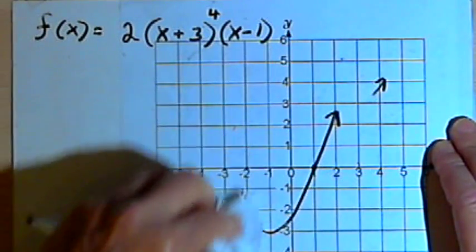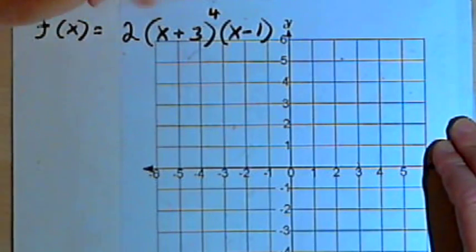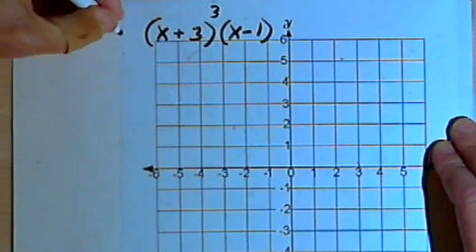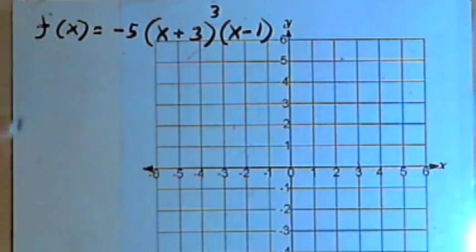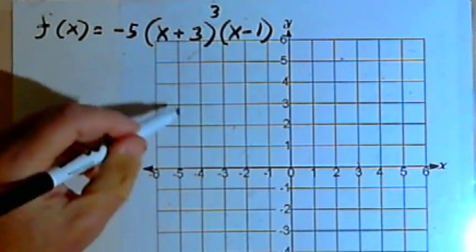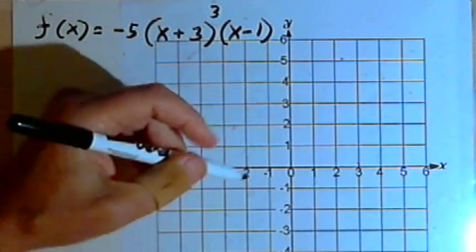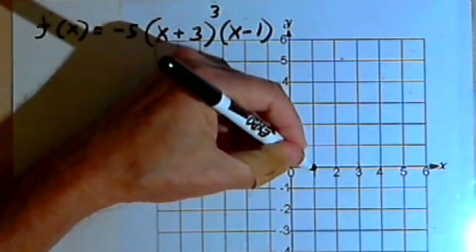Let's see what happens if we have an odd multiplicity. So let's take this and change it to (x+3) to the third power. And just for variety, let's make it a negative lead coefficient. We'll make it a negative 5. Once again, we're going to have the same zeros. I've still got an x plus 3 and an x minus 1, so I'll have a zero at negative 3 and at positive 1.